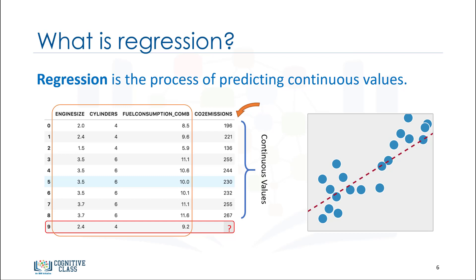Given this data set, you can use regression to predict the CO2 emission of a new car by using other fields such as engine size or number of cylinders.